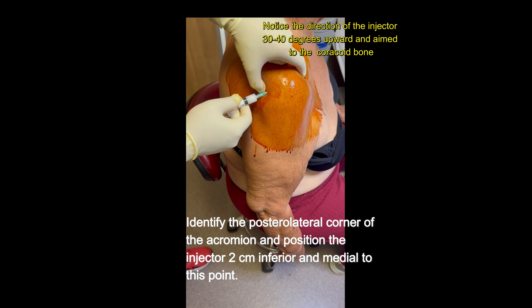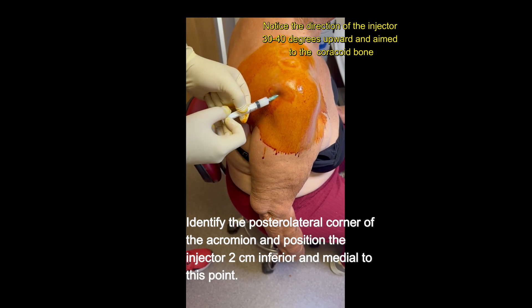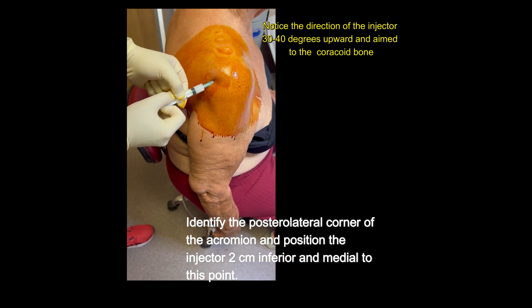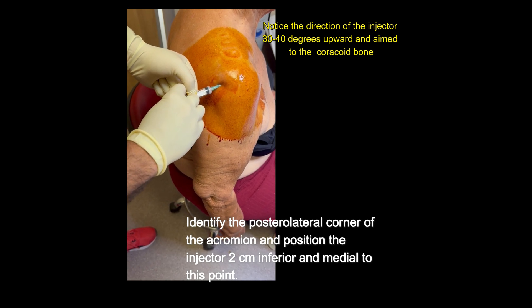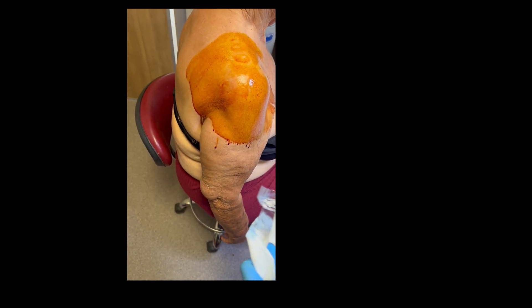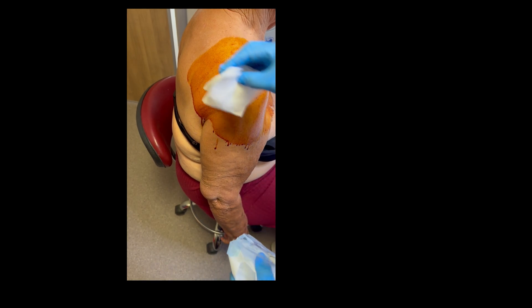Identify the posterolateral corner of the acromion and position the injector 2 centimeters inferior and medial to this point. Notice the direction of the injector: 30-40 degrees upward, and aim to the coracoid bone.